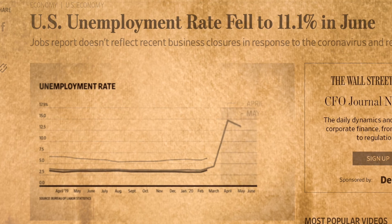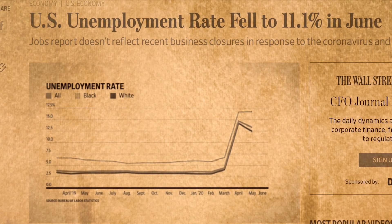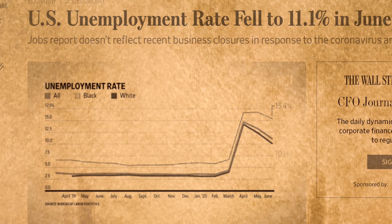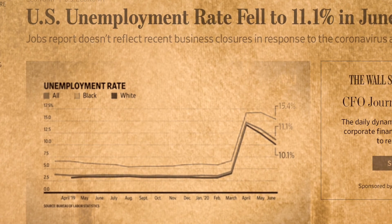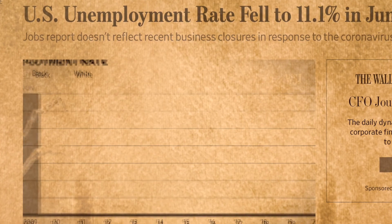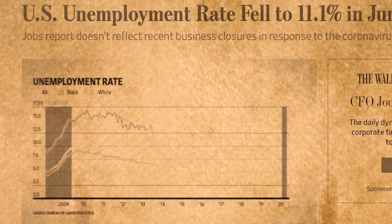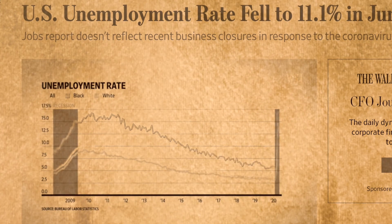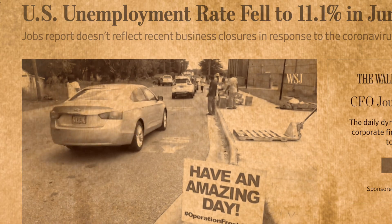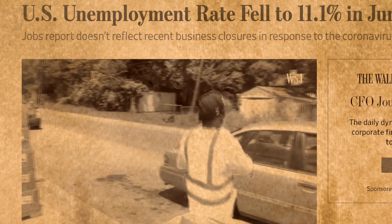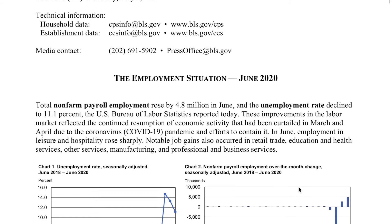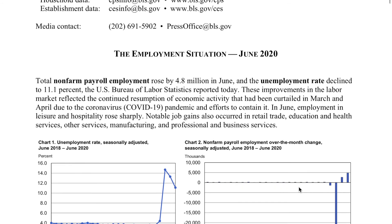But that dip wasn't universal. Black unemployment ticked upwards. It declined in June, but not at the same rate as unemployment overall. This follows a decade where the unemployment gap between white and black workers has been narrowing, but the recent unemployment figures reveal the financial fragility.